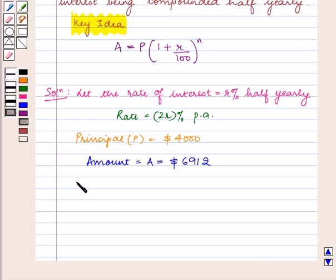The time n is equal to 1 and a half years which is equal to 3 by 2 years, that is 2 into 3 by 2 which is equal to 3 half years.